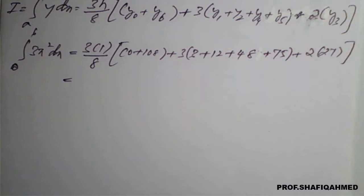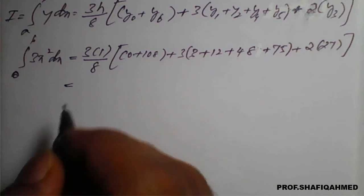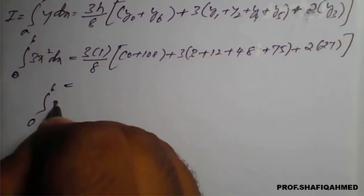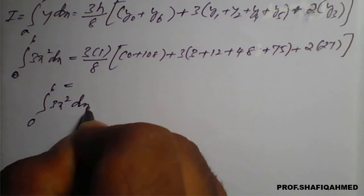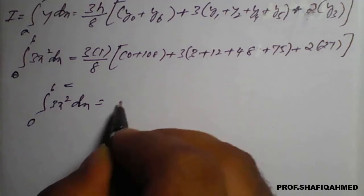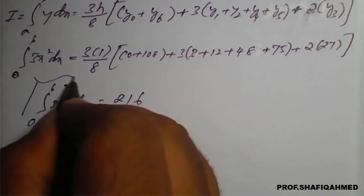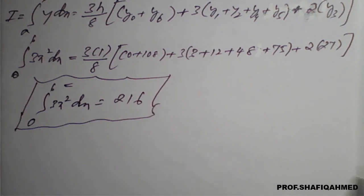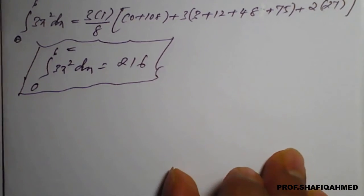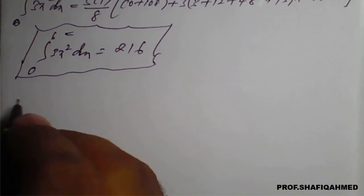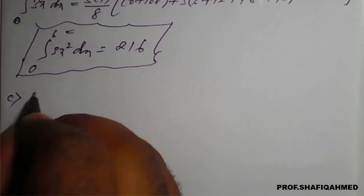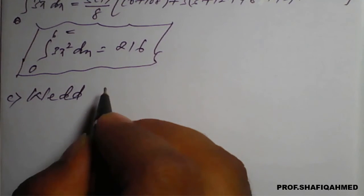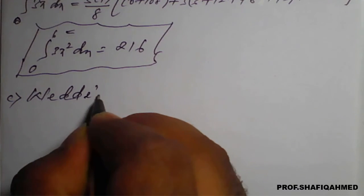Therefore we conclude that integration 0 to 6, 3x squared into dx is 216. This is by Simpson's three-eighth rule. Next, the third method we will apply — that is Weddle's rule. So we will see Weddle's rule also here.